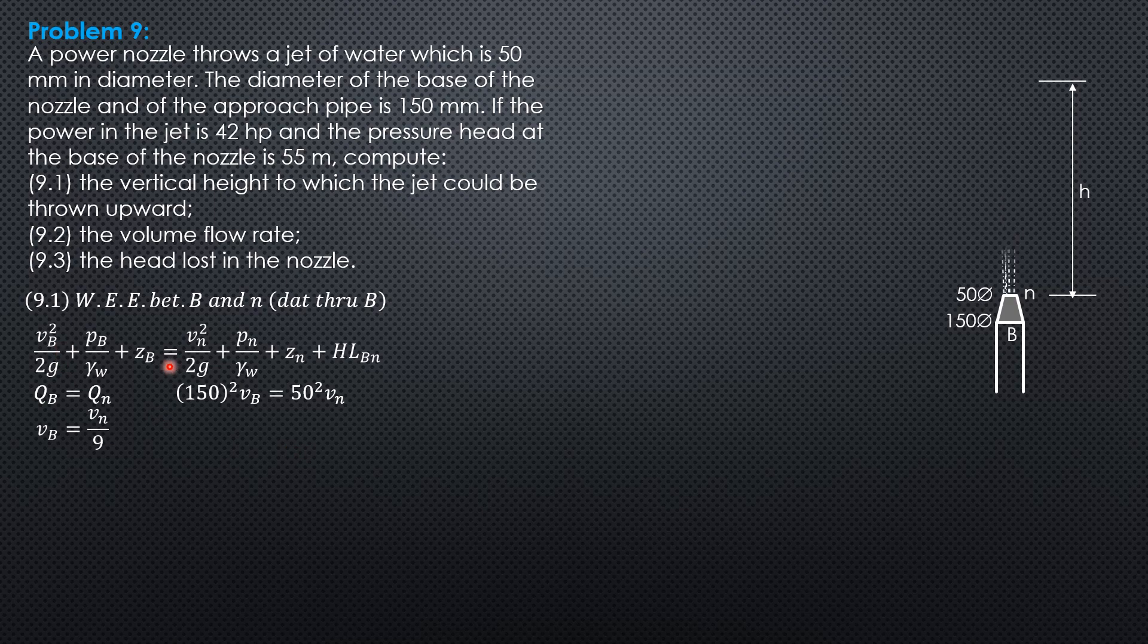Substitute into that equation. So v sub n over 9 quantity squared over 2g plus 55, pressure head at b is 55. Elevation head 0 equals vn squared over 2g velocity head at n plus 0 pressure head because it is exposed to the atmosphere. Elevation head at n is also 0 then head loss from b to n.